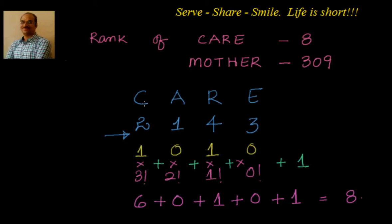Let me repeat that again. First, write down the word for which we want the rank: CARE. Then alphabetically rank each letter — A is 1, C is 2, E is 3, and R is 4. Now, starting from left to right, we take the first letter's rank, which is 2. How many words are less than 2? Indirectly, we are asking how many words we have to complete before reaching C. We have to complete all A words first, which is 1. That's why we multiply by 3 factorial — we want all words starting with A.